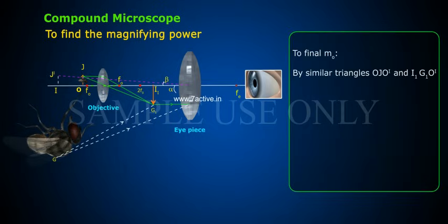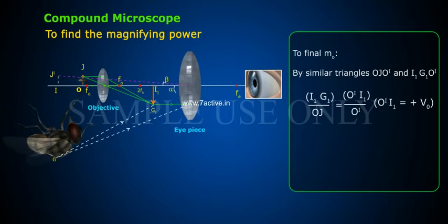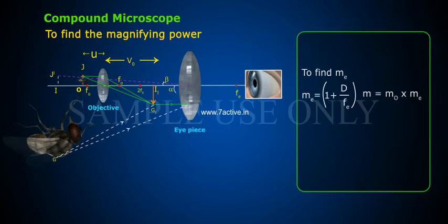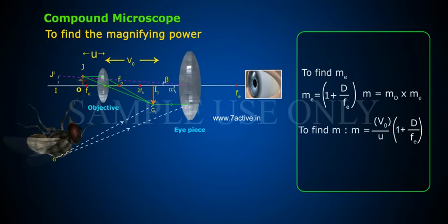To find Mo: by similar triangles OJO' and I1G1O', we get I1G1 by OJ equals O'I1 by O'O. Here O'I1 equals plus V-naught, and O'O equals minus U, so Mo equals V-naught by U. To find Me: Me equals 1 plus D by Fe. Therefore M equals Mo into Me.